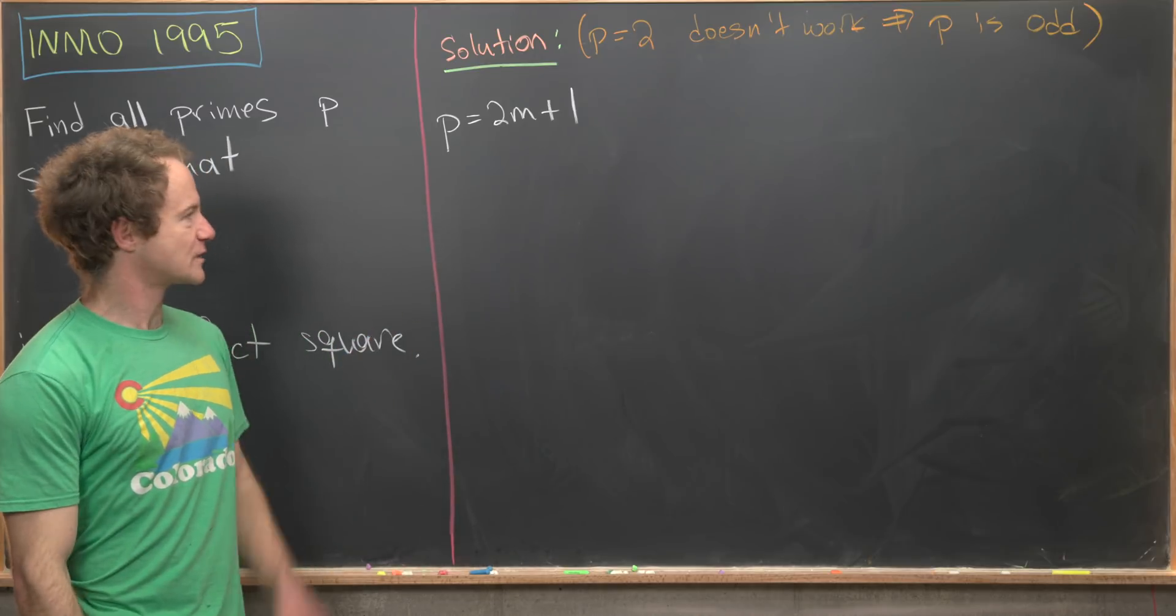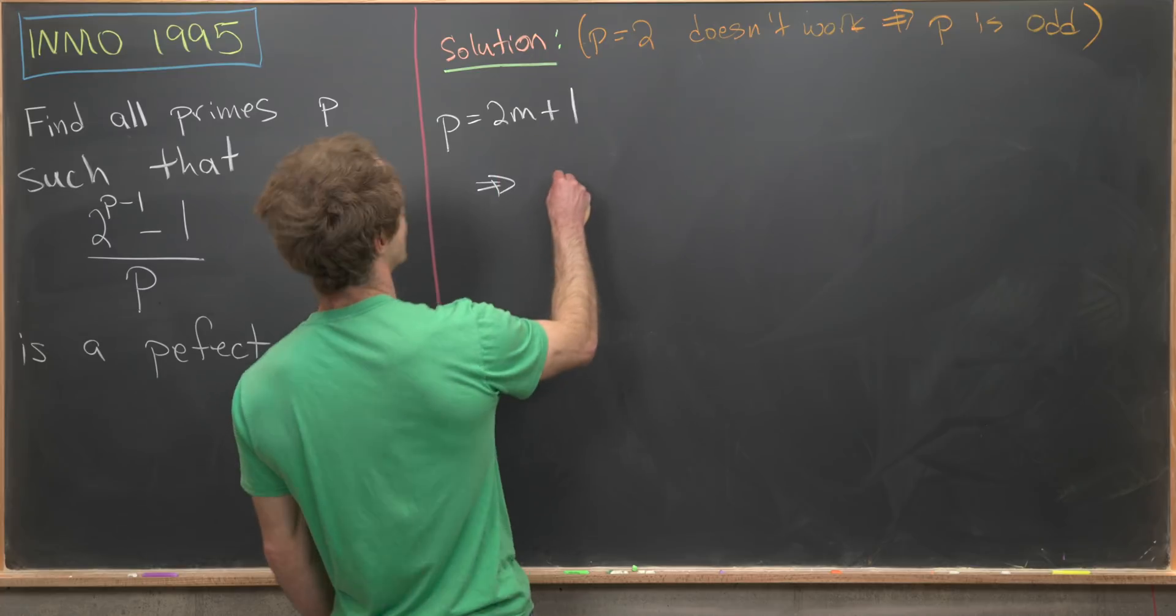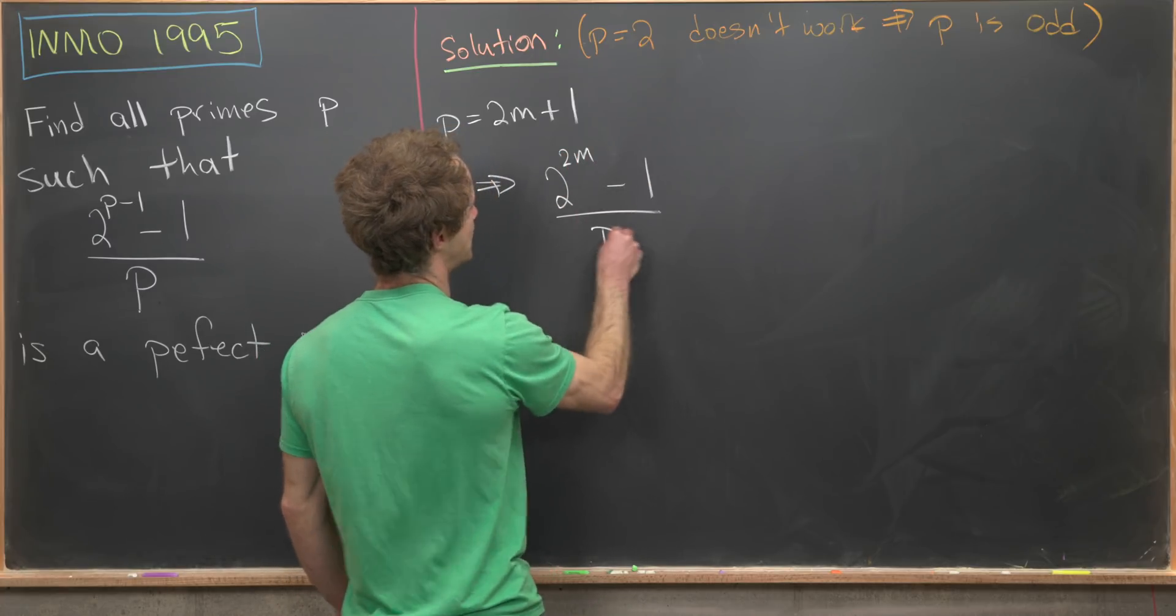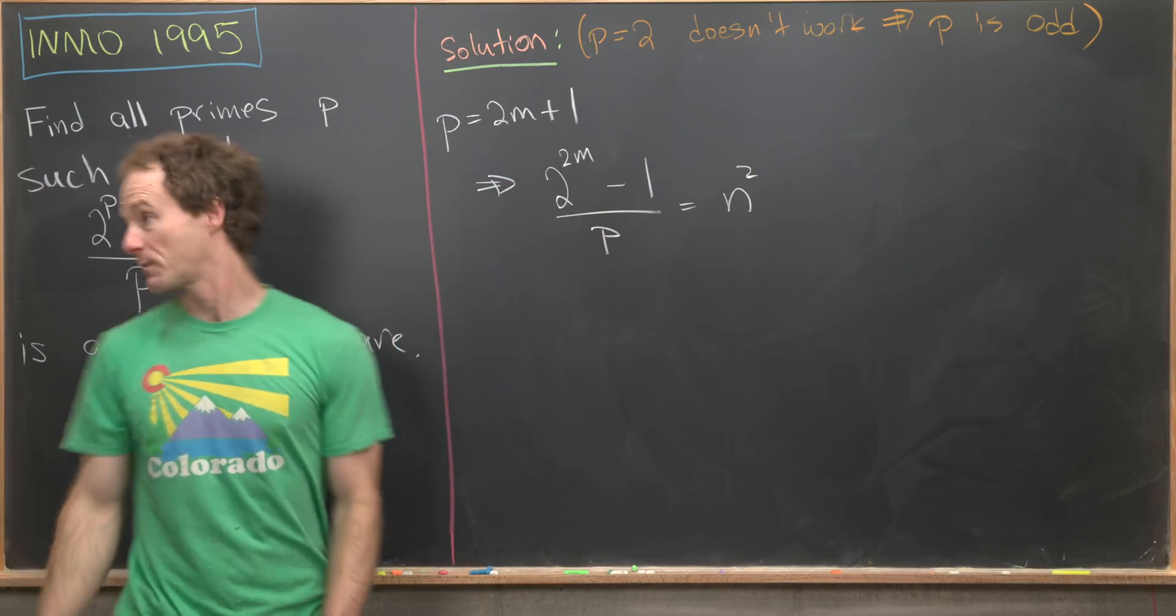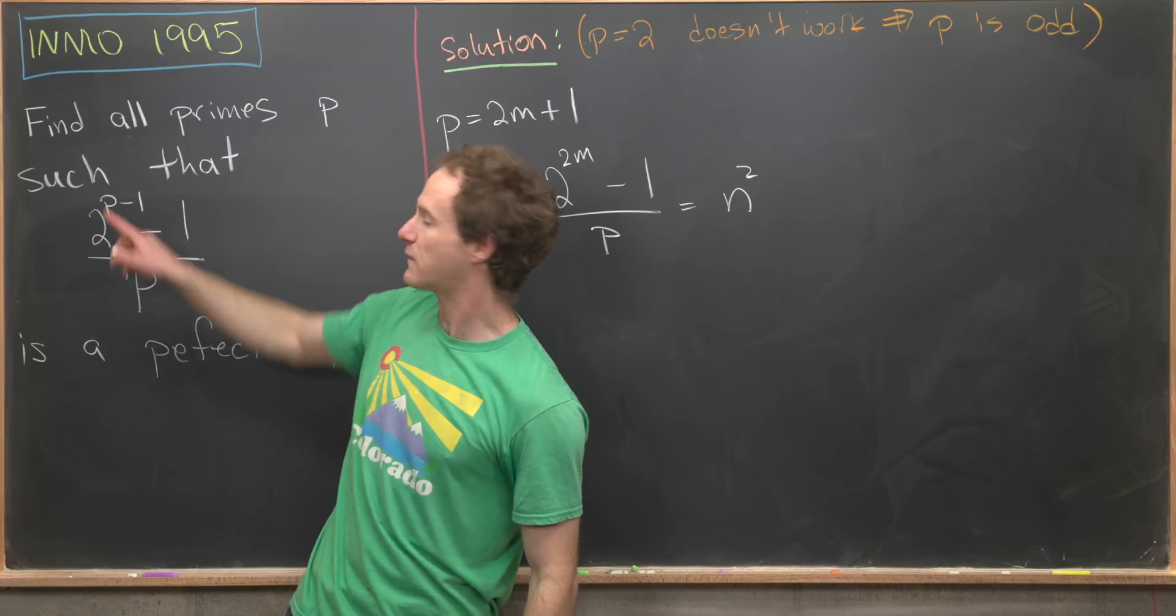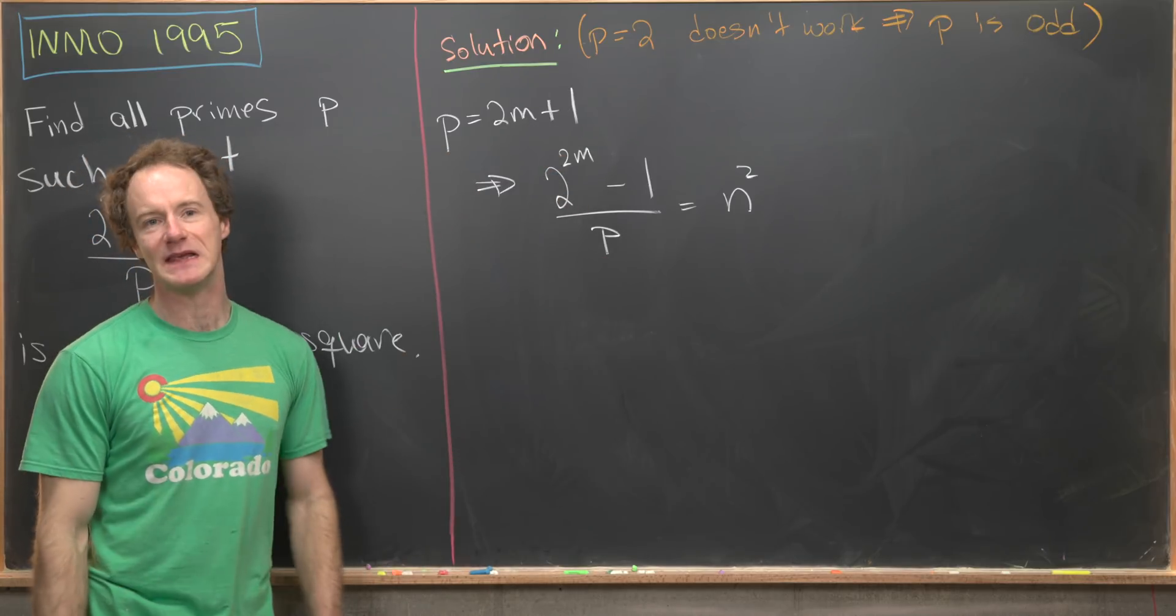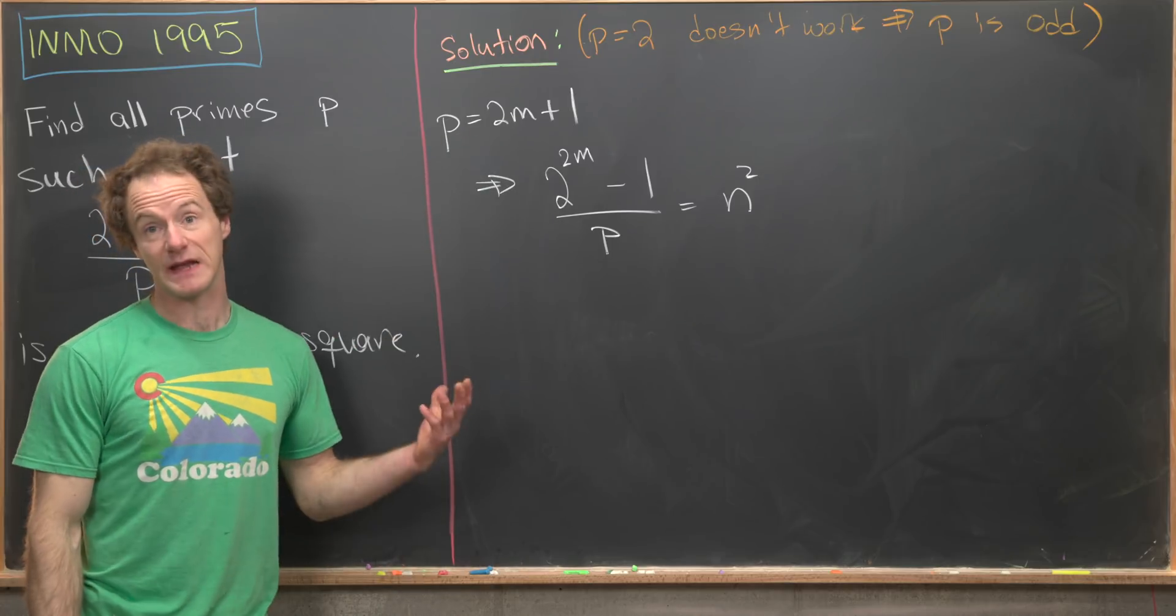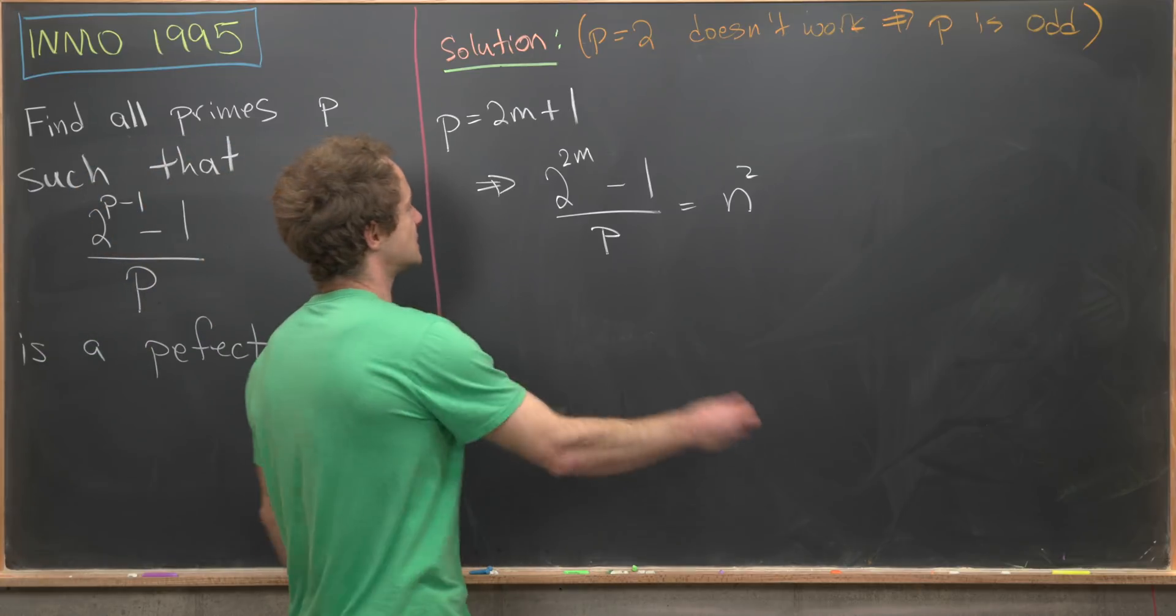So plugging this value of p into the exponent right here, we won't worry about the denominator here. And enforcing the fact that this must be a perfect square tells us that we have (2^(2m) - 1)/p = n^2. So notice I've replaced my p here with 2m+1. That cancels the plus 1 and the minus 1. But I've left my p down here because we don't need the form of p being 2m+1 in the denominator.